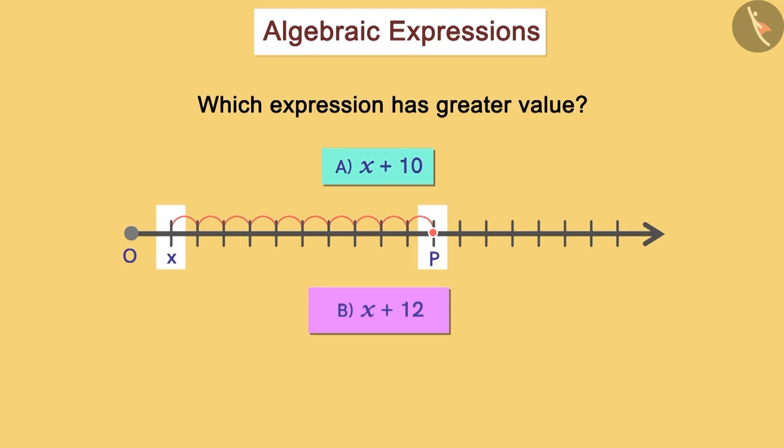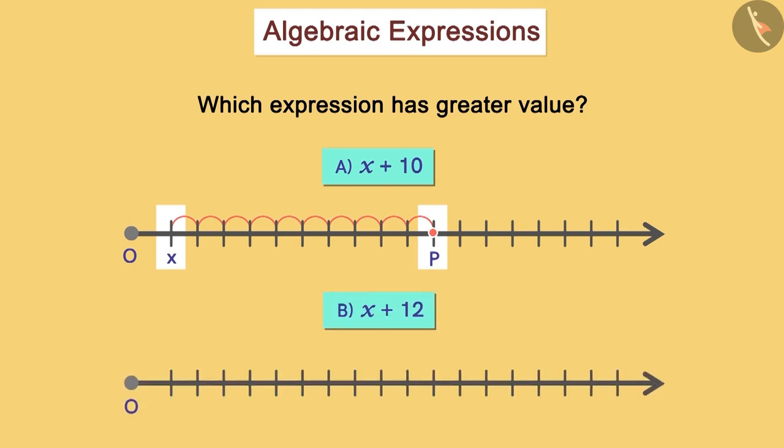In a similar manner, we can represent x + 12 on the number line. It will be 12 units ahead of x. Here, the value of x + 12 is represented by Q.